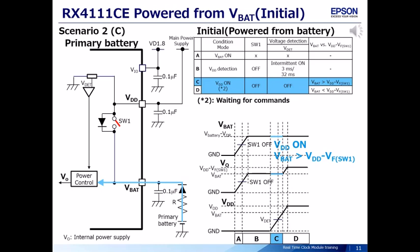Scenario 2, Case C: After that, when the main power is turned on, the real-time clock module will be ready to accept commands. In this condition, VBAT is more than VDD minus VF for SW1, and the power is supplied from the backup battery.